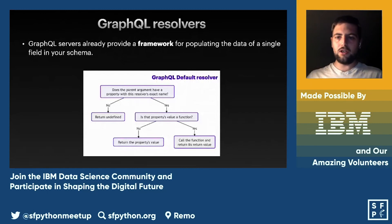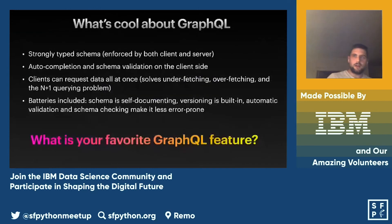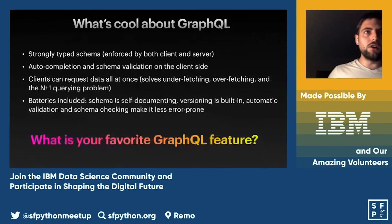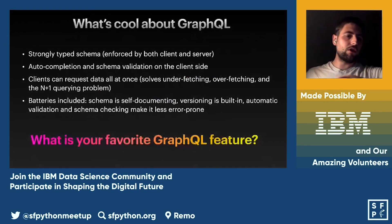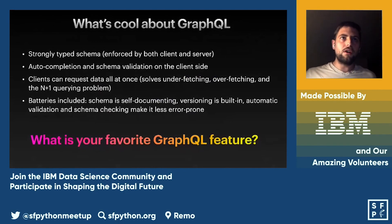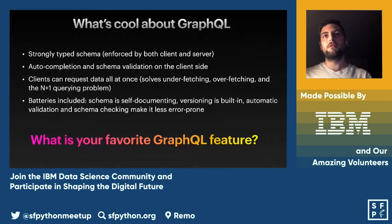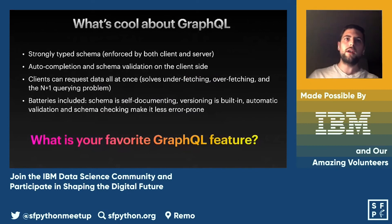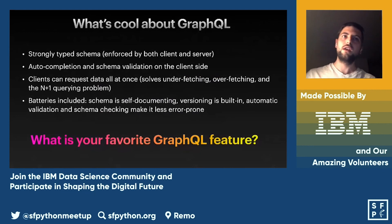What's great about GraphQL? I love the strongly typed schema and the auto-completion and schema validation you saw in the playground. This makes it really easy to request a lot of data quickly, and it solves well-documented problems such as underfetching, overfetching, and the N+1 query problem.